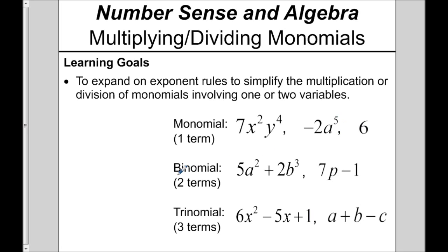A binomial, like a bicycle, has two terms — or two wheels for a bicycle. So here we've got one term because these things are multiplying, and here's another term, 2b to the 3. They're adding with each other, so that's two terms. Contrast that with a monomial — there's nothing adding or subtracting. And the same thing with the binomial 7p minus 1: two terms adding or subtracting. Naturally, a trinomial, like a tricycle has three wheels, has three terms, each adding or subtracting with each other.